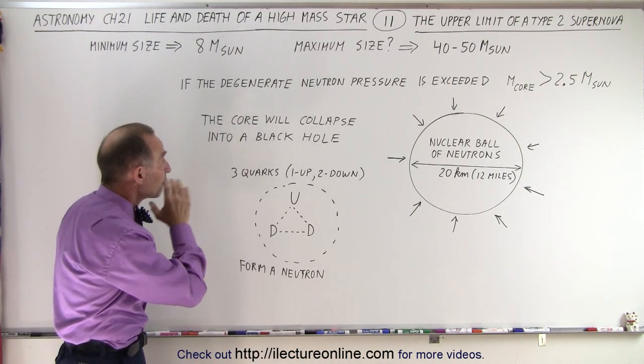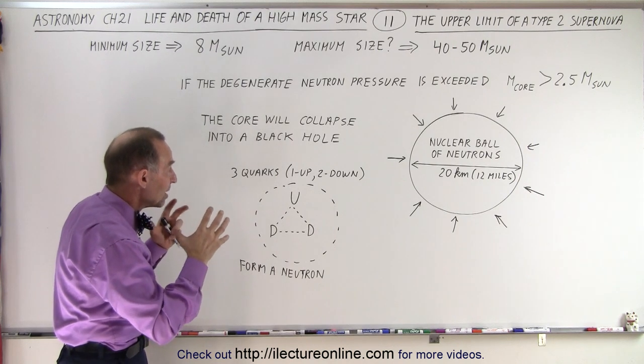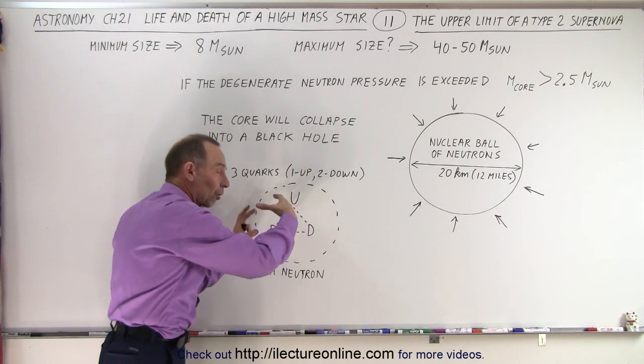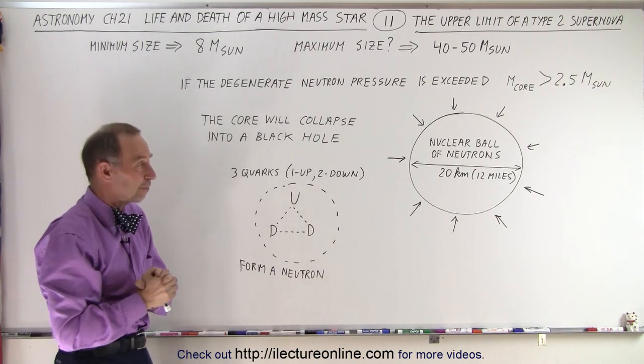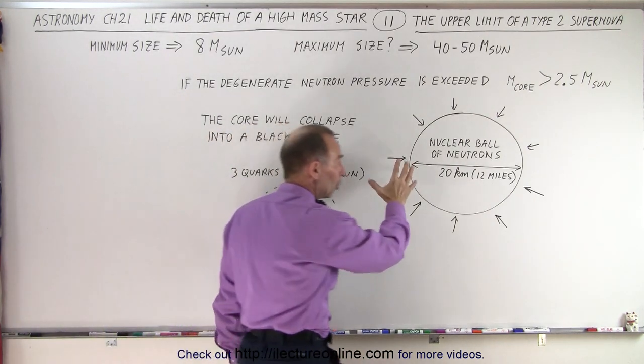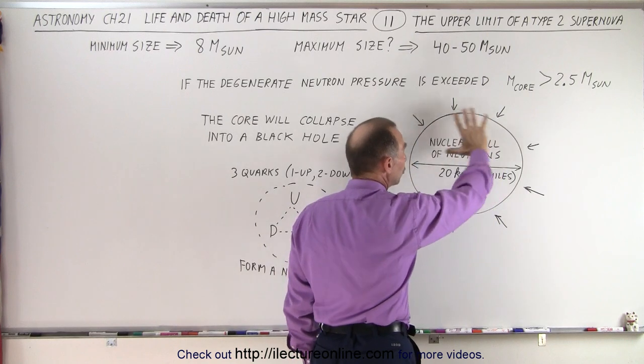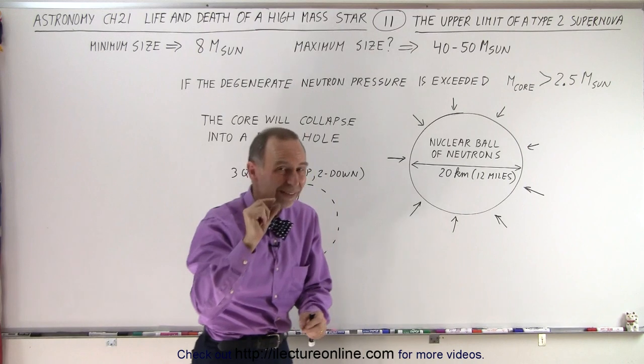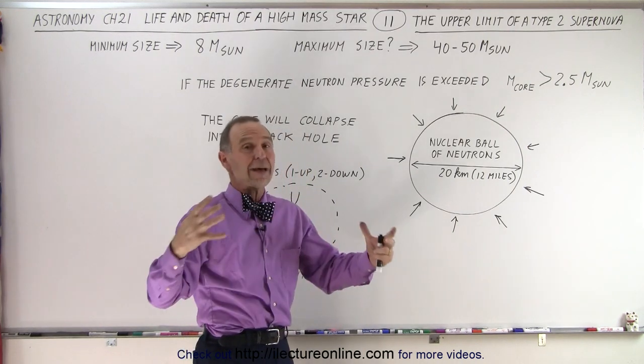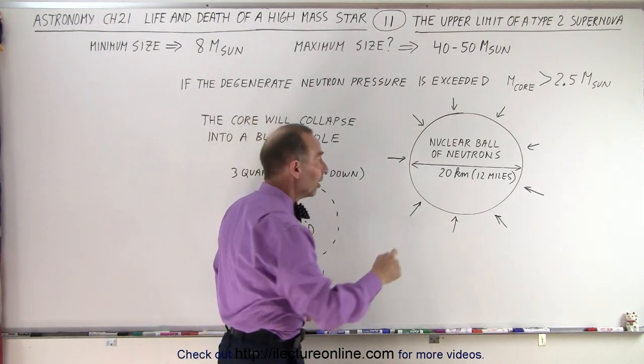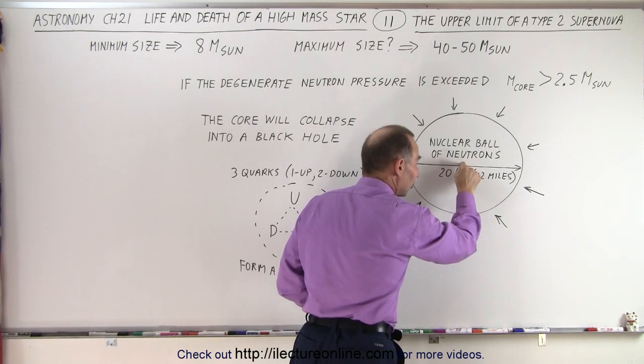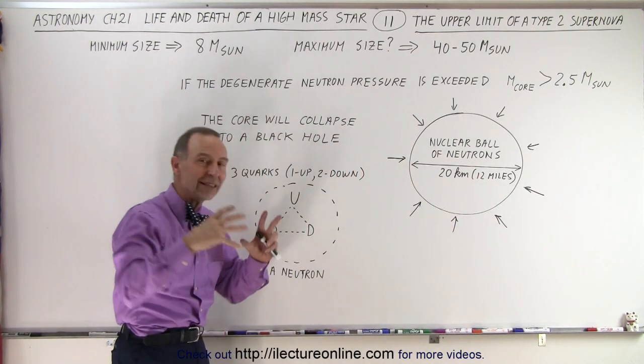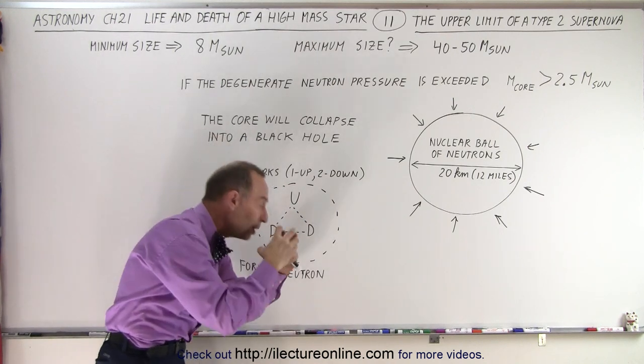Essentially, the neutron pressure will be insufficient to keep the quarks from collapsing in on themselves. In other words, if we have that nuclear ball filled with neutrons, 20 kilometers across, 12 miles across, where one single two-teaspoon full has a mass of 100 million tons, the pressure and the force at the very center are so enormous that the quarks cannot withstand that enormous pressure and they will implode in on themselves.